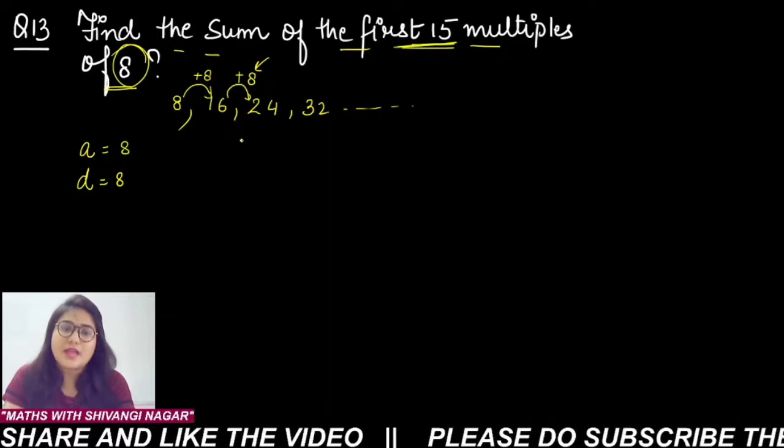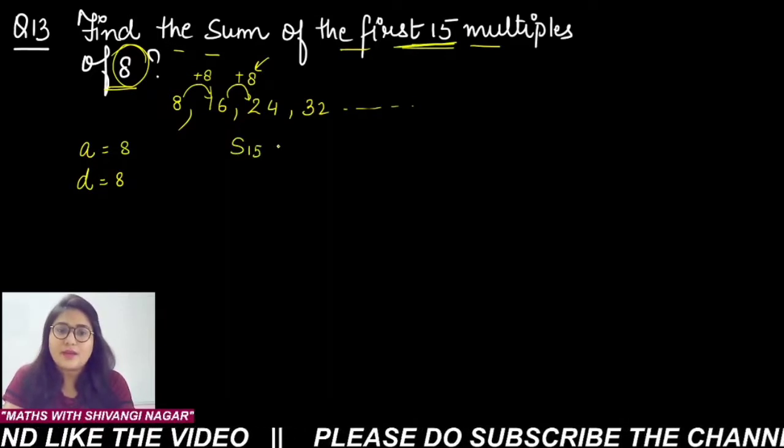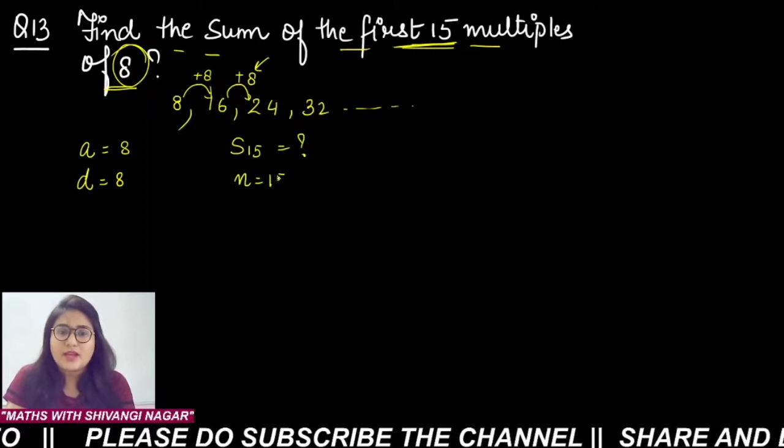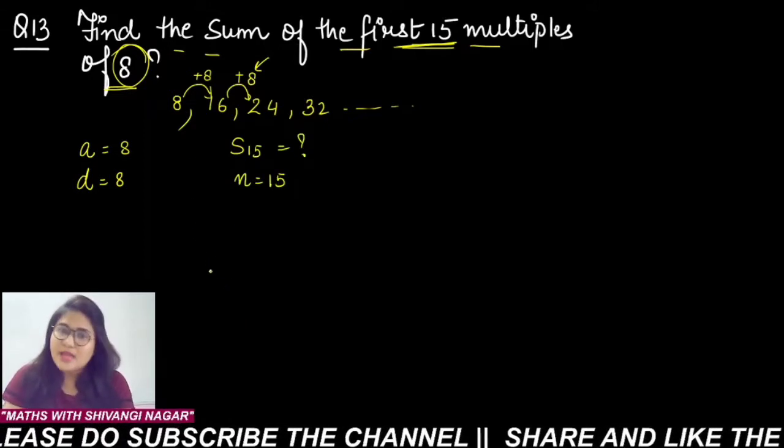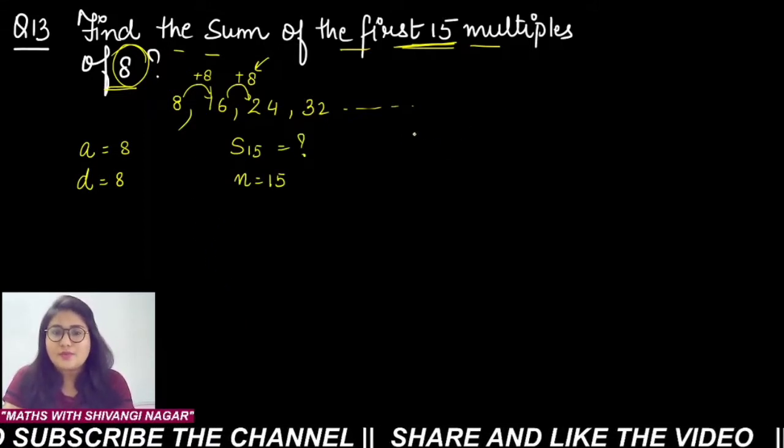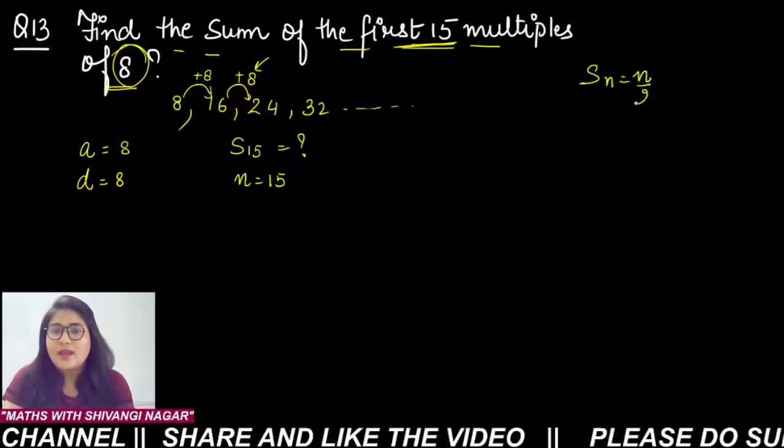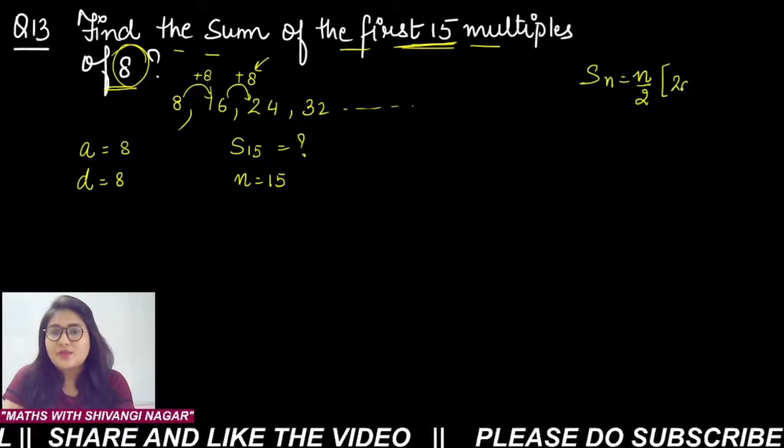That means S15 we have to calculate. We can calculate this because we have the formula. The sum of n terms formula is n/2 multiplied by 2a plus (n-1) times d.